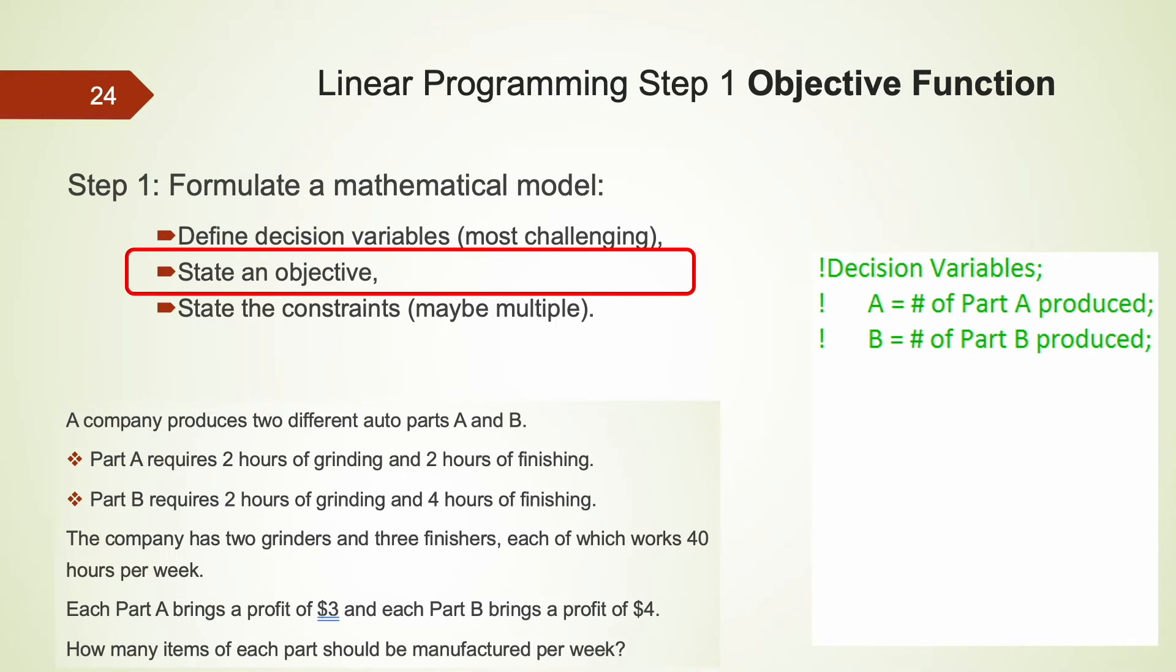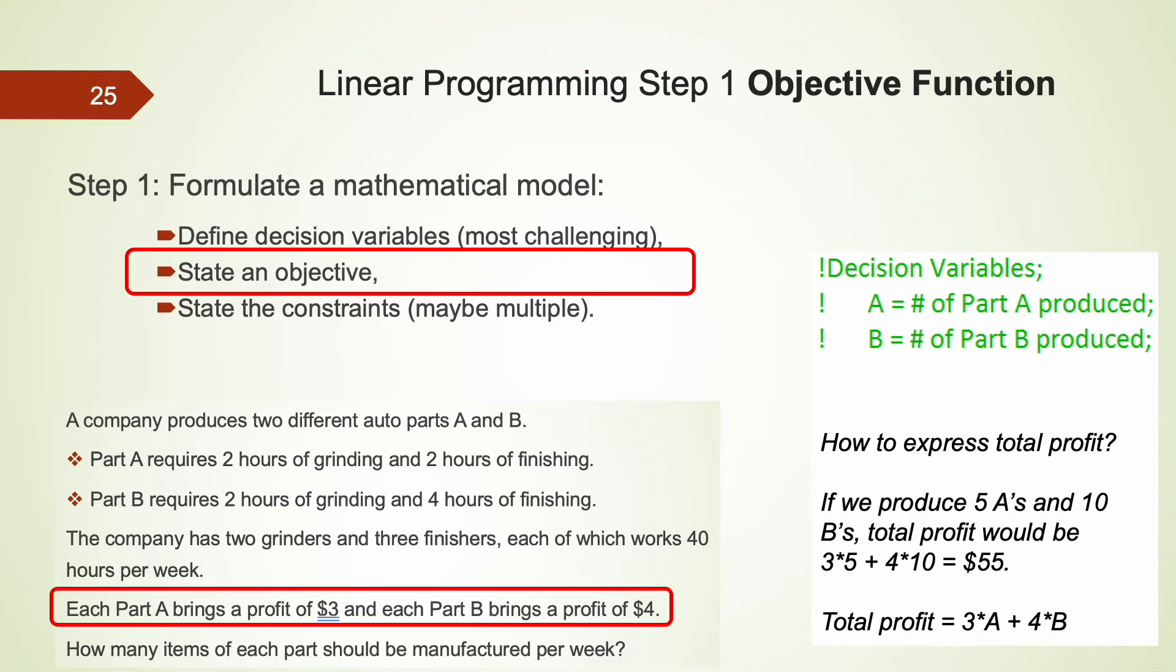Let's move on to the next part, where we state the objective function. What's the purpose of finding the best production plan? For this particular company, it is about maximizing total weekly profit. So we want to state this objective function in lingo or Excel solver. First, we want to express the total profit first before we can maximize it. At this moment, we don't know how many A and B should be produced by this company. That's the whole point of this decision problem.